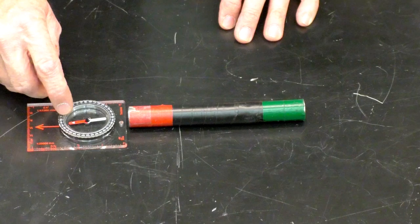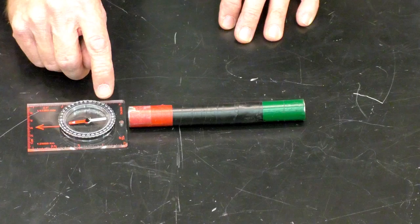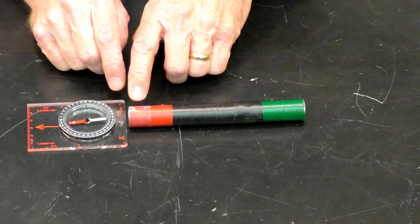this is the north pole of the magnet and the south pole of the magnetic compass needle. This south pole is attracting the north pole of this bar magnet.